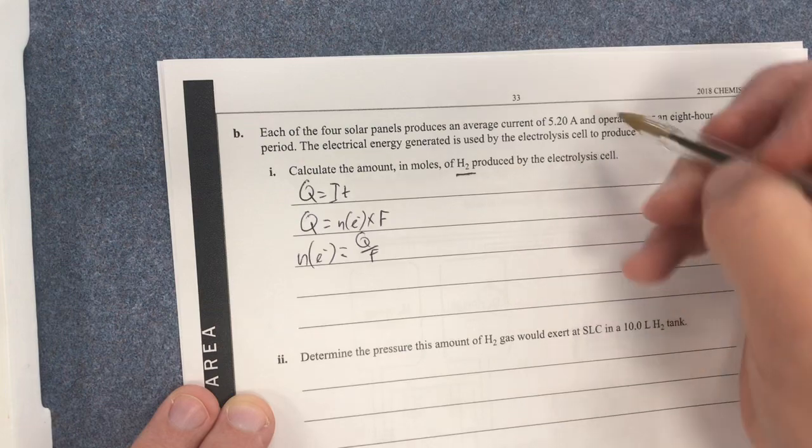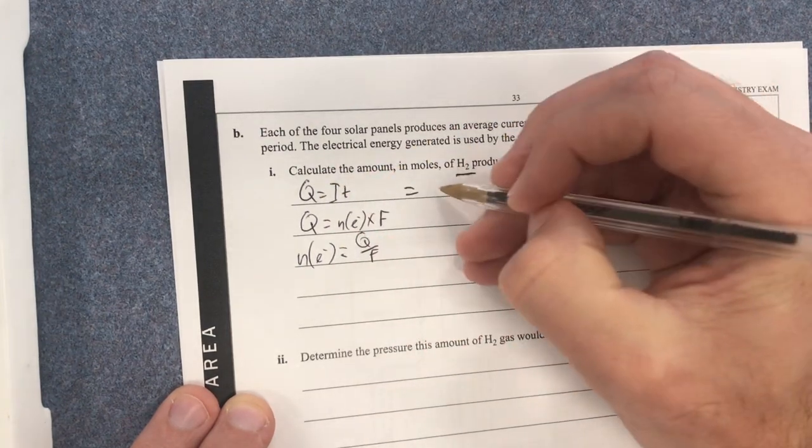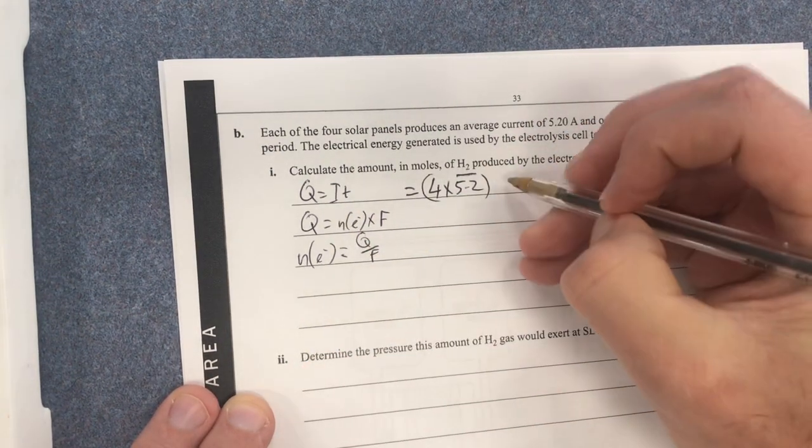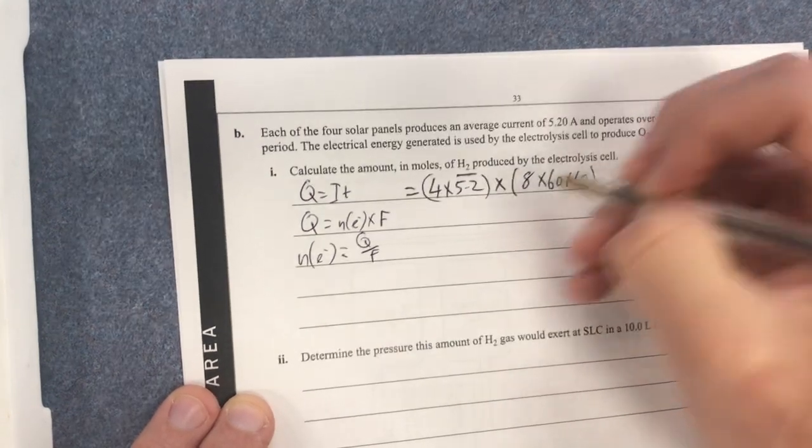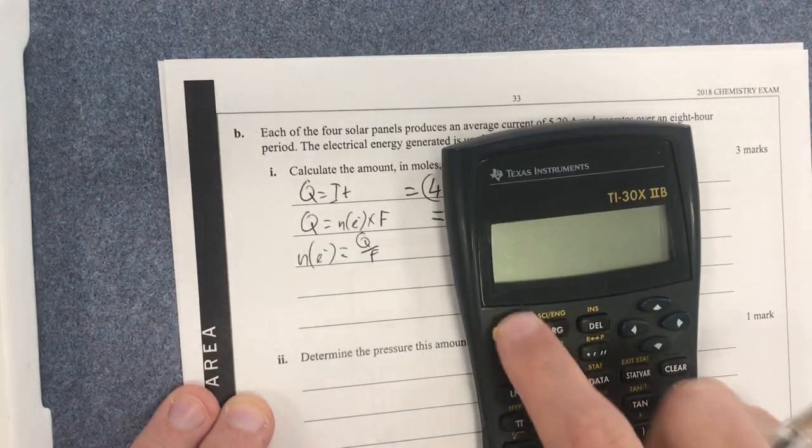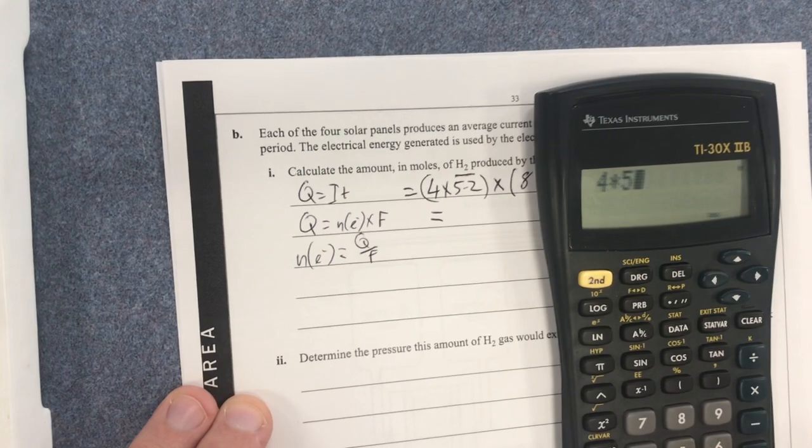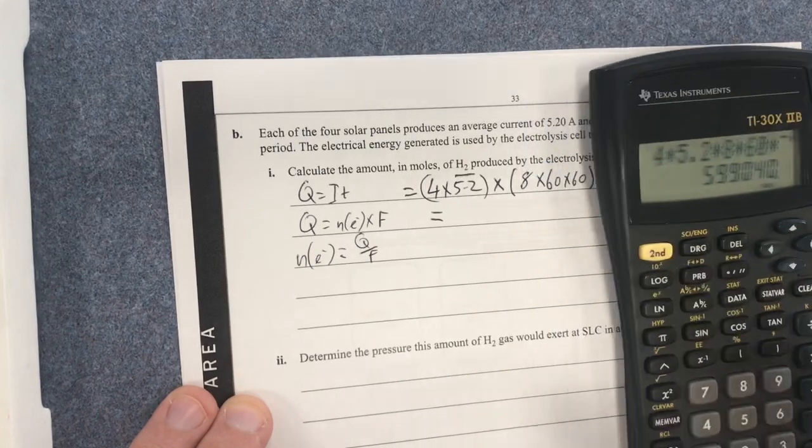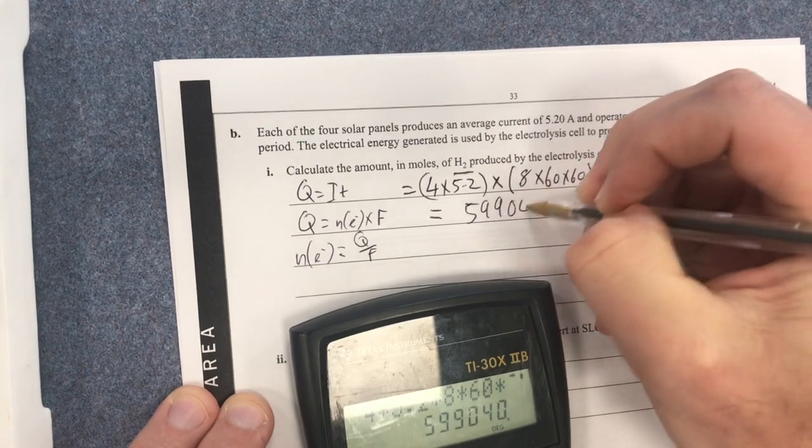Each of the four, so therefore each cell produces this many amps. So therefore my Q here is going to be equal to 4 times 5.2 for my ampage. Then that's going to be times by 8 hours, 8 hours times 60 minutes times 60 seconds. That's going to be a lot of electrical charge. So therefore I get my trusty calculator. 4 times 5.2 times by 8 times by 60 times by 60 equals a relatively large number. 599040 coulombs.